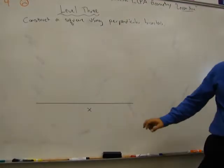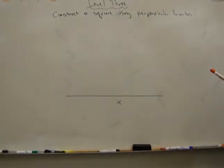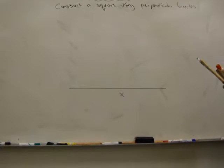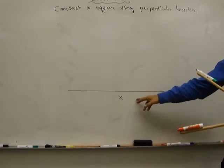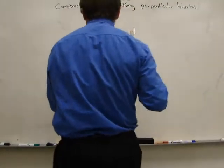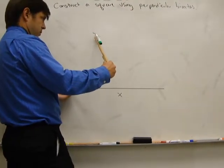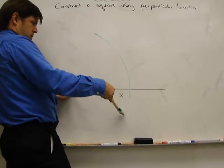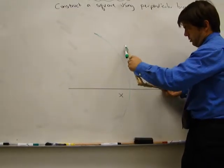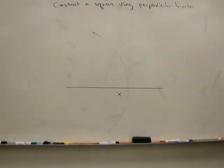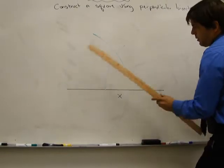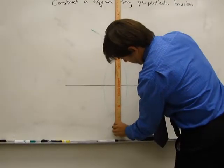So the first thing we're going to do with the segment is we're going to make a perpendicular bisector. Now remind me guys, how long is this segment? X. So when we bisect it, how long will the two segments be that we make? X over two. So here's our perpendicular bisector happening right here. You guys all mastered level two, so you know how to do a perpendicular bisector. Now what we do, of course, is we connect it.